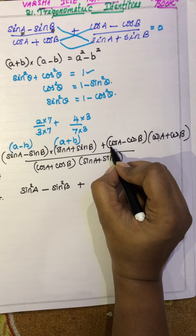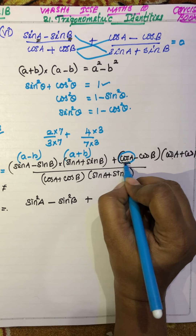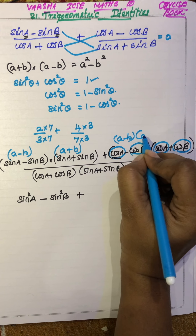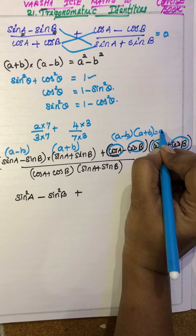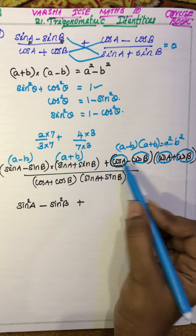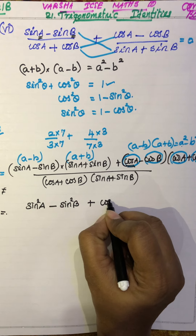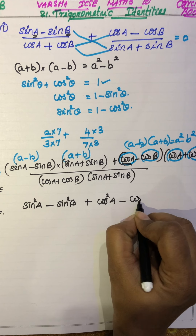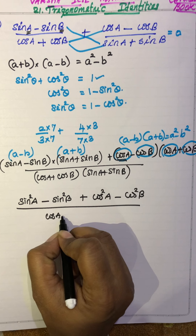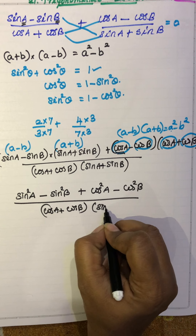So what is 'a' here? For the cosine term, 'a' is cos A and 'b' is cos B. This is (a - b) and this is (a + b), so we can write a² - b², which gives cos²A - cos²B. The denominator is kept as it is: (cos A + cos B)(sin A + sin B). You need not multiply it out — just keep the denominator as it is.